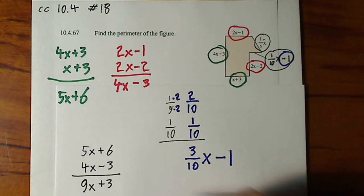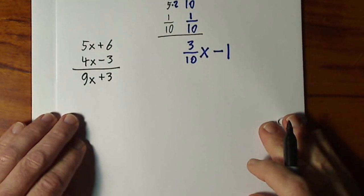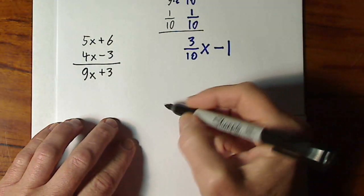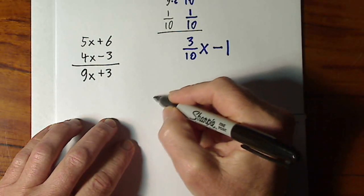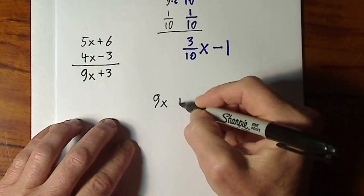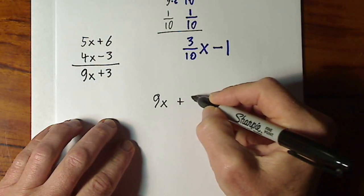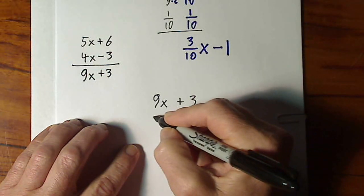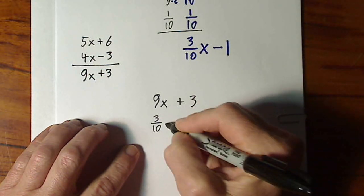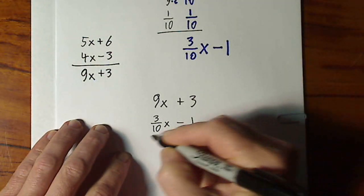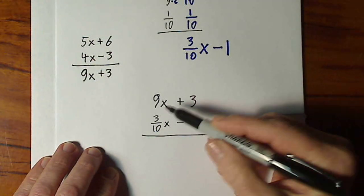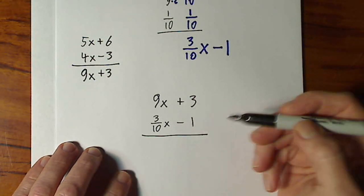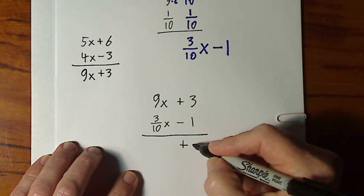I think I'll just stack them up and see if you can see how this works. 9x plus 3 and 3 tenths x minus 1. This might look rather strange, but there's kind of a nice trick we can use here. As far as the positive 3 and the negative 1, that yields a positive 2.